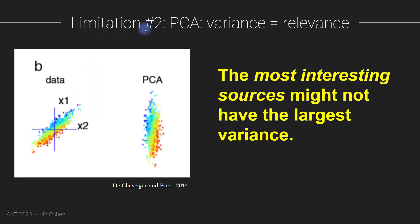The second limitation of PCA is that it assumes variance equals relevance. PCA doesn't know what's important in the data — it just knows what has the highest variance. The highest sources of variance in the data are not necessarily the most interesting things. I already gave the example of artifacts: if there are artifacts in the data, PCA will say those have the highest variance and therefore must be the most important, which is not really the case.